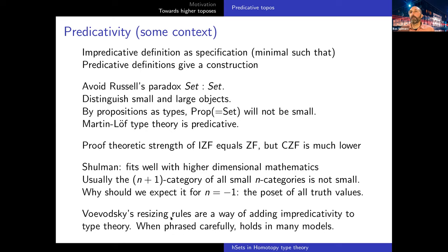Usually the n+1 category of all small n-categories will not be small. Now what happens if we take n is minus 1? Then we get the 0-category of all minus 1 categories. The 0-category is the same as a poset, and the minus 1 categories are the truth values. In this case you would get the poset of all truth values, which are the propositions. By accident, in classical mathematics this thing is small, but if you go up the higher dimensions, you see there's no reason why it should be small. So Voevodsky proposed resizing rules so that we could do quite a few of the constructions from classical set theory. The way he formulated it first 10 years ago in his presentation in Bergen, we don't know of any models of those precise rules. But if you phrase it carefully, like we did in the HoTT book, it actually holds in many models.